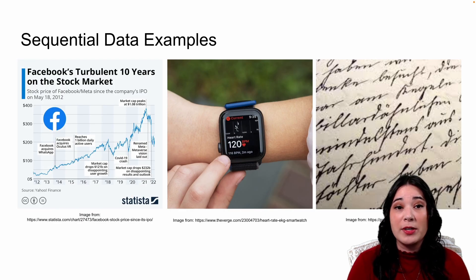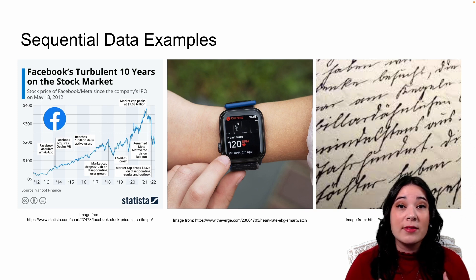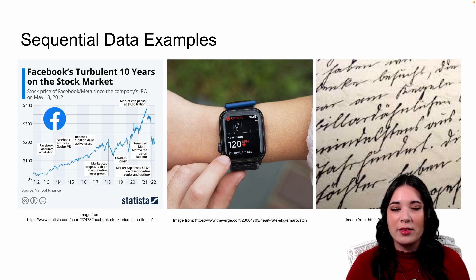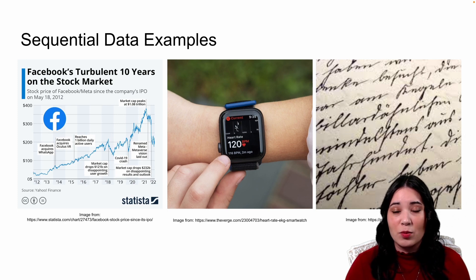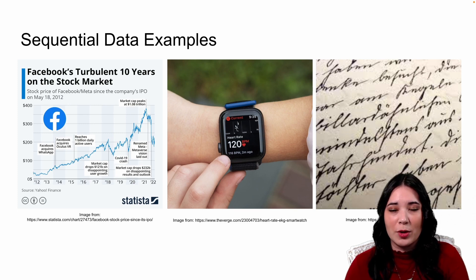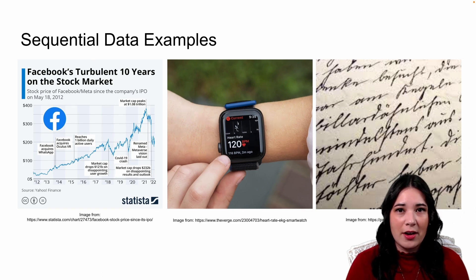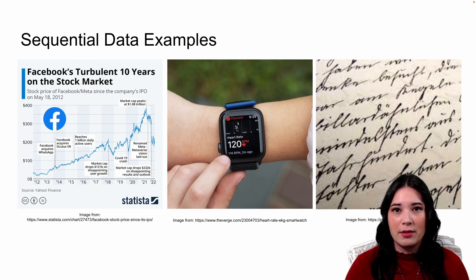Sequential data is probably very familiar to you. For example, things like stock prices over time — that's sequential data. Also, a lot of sensor data: think about things you wear, like an Apple Watch measuring your heart rate or your steps. And lastly, written text is sequential. When we read, write, or talk, all of the words have a meaningful order in a sequence. The first word can't suddenly jump to the middle of a sentence and still make sense. So with sequential data all around us, it makes sense that we may want to model it using neural networks.